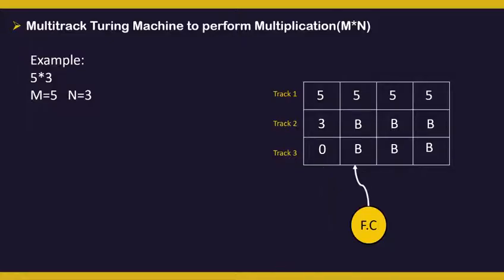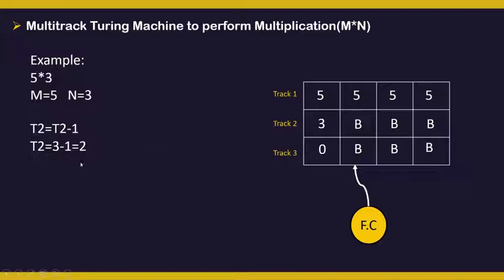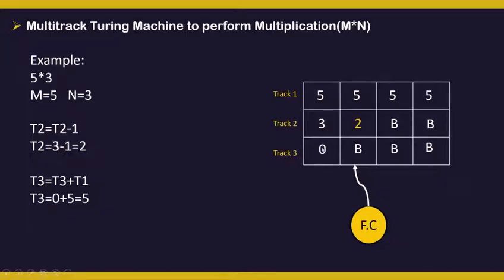Now we update the track 2 value as t2 = t2 - 1, that is 3 - 1 = 2. So we update the value in the next column with t2 = 2. And we update the value in track 3 as t3 = t3 + t1, that is 0 + 5 = 5. So we have done the changes.